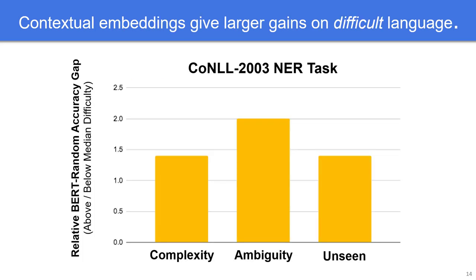We validate this hypothesis showing that the performance gap on the CoNLL-03 NER task between BERT and random embeddings is larger on validation set examples that are more difficult according to our three metrics. In particular, we rank the validation examples of a task according to each metric value and compare the performance gap on the half of the validation set that is above median difficulty relative to the half that is below median difficulty. At the red line, the performance gap between BERT and random on the difficult half is equal to the gap on the easier half. However, we find in our experiments that the gap in performance is in fact 1.4 to 2x larger on the difficult half relative to the easy half.